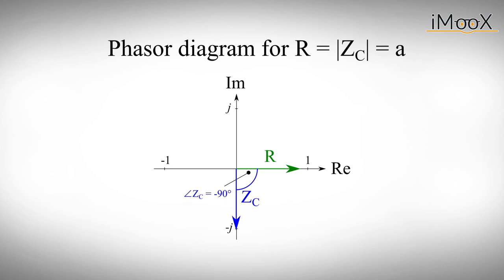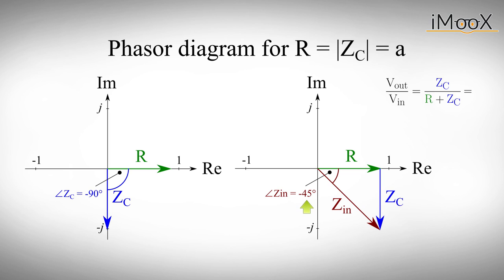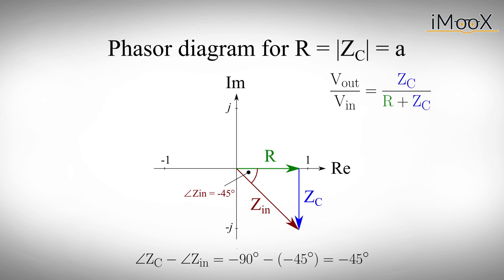Let's assume a signal frequency where the impedance of our resistor and our capacitor are exactly the same. This will lead to an angle of minus 45 degrees for Zin. If we want to calculate the angle of Vout over Vin, we have to do the following subtraction. The angle of Zc minus the angle of Zin is minus 90 degrees minus minus 45 degrees, which is equal to minus 45 degrees. This point of the plot is very special, because it is exactly where our corner frequency Fc is defined. If we want to calculate the attenuation at this point for an arbitrary length A, we can apply the law of Pythagoras. As a result, we now know that at the corner frequency Fc, the output voltage of a real filter is always one over the square root of two times the input voltage.